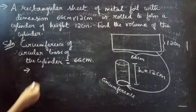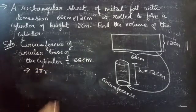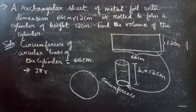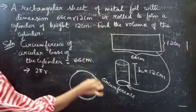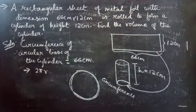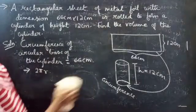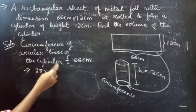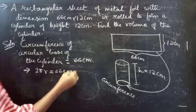We know the circumference of a circle is 2πr. Since the base is in the form of a circle, we apply that formula. From this we get 2πr equals 66 cm.